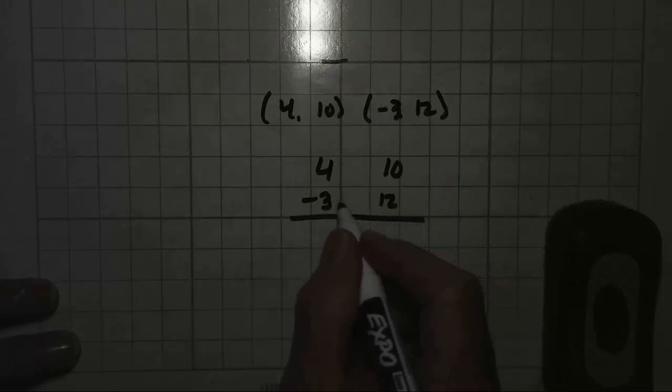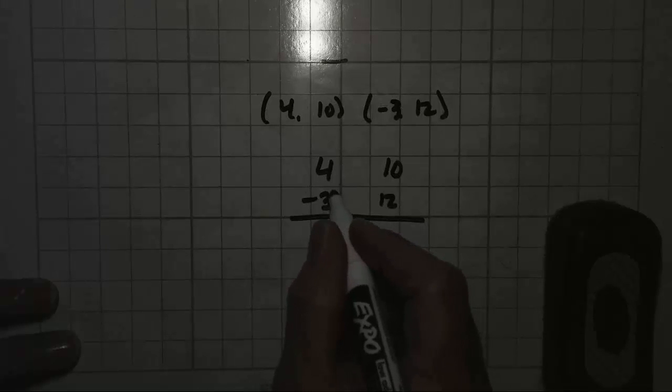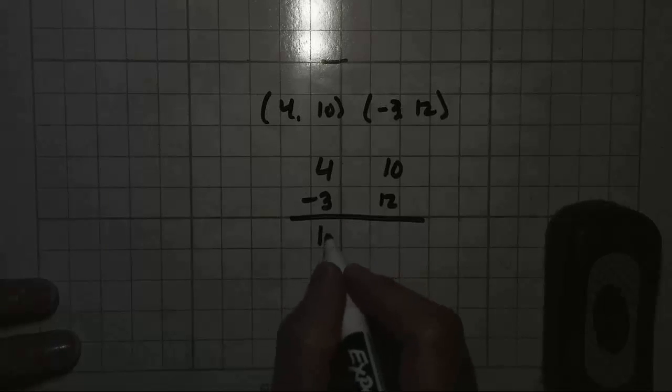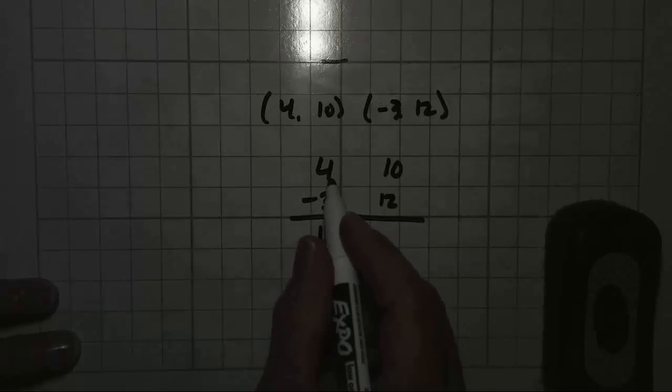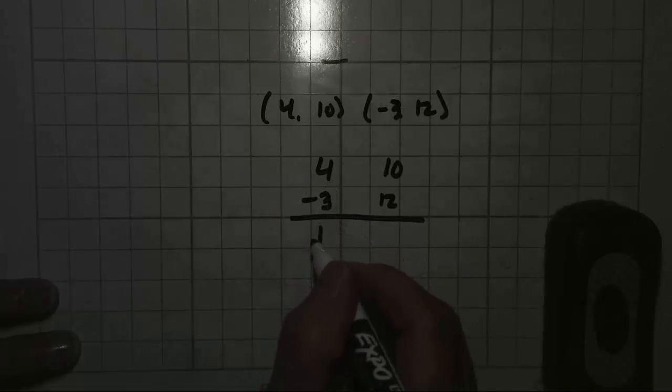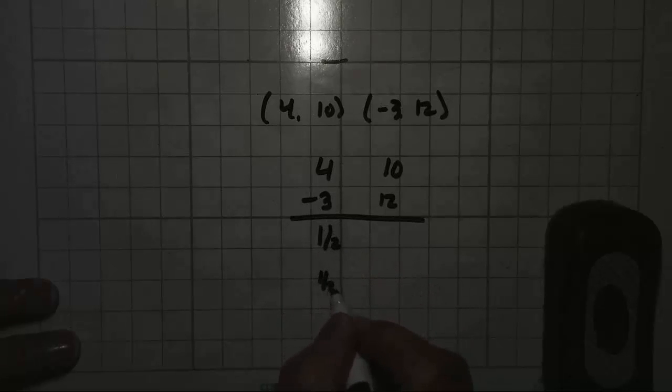4 plus negative 3. They have different signs, so we're going to subtract. 4 minus 3 is 1. We're going to keep the sign of the bigger number. 4 is larger than 3, so our answer is going to be 1. 1 divided by 2 is 1 half or 0.5.